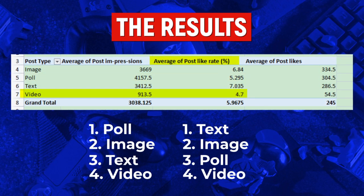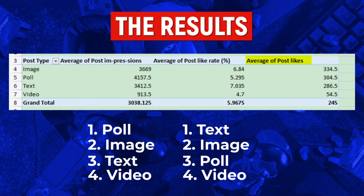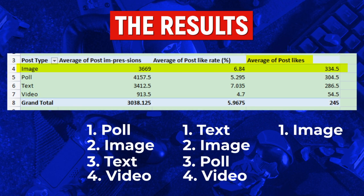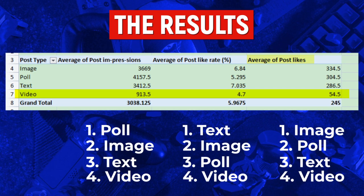Then lastly, looking at the average post likes — how many likes each post got on average — the image came in at number one, then the poll, then text, then video. Overall, we can say for a fact that yes, polls get more impressions — that's without question. However, it looks like images get the highest quality of traffic.